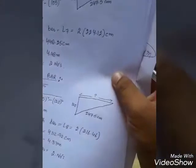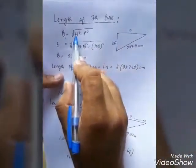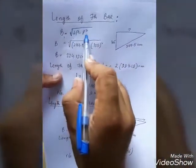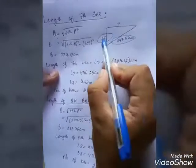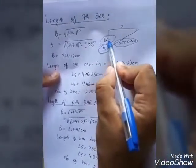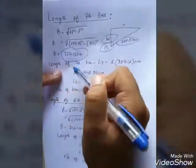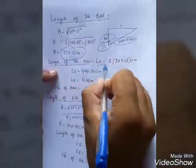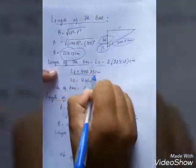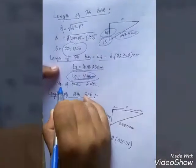For the seventh bar, base equals root of 247.5 squared minus 105 squared, since perpendicular increases by 15 each time. Base equals 224.12 centimeters. Length of seventh bar is 2 times 224.12 equals 448.25 centimeters, so L7 is 4.48 meters. Number of bars is two.